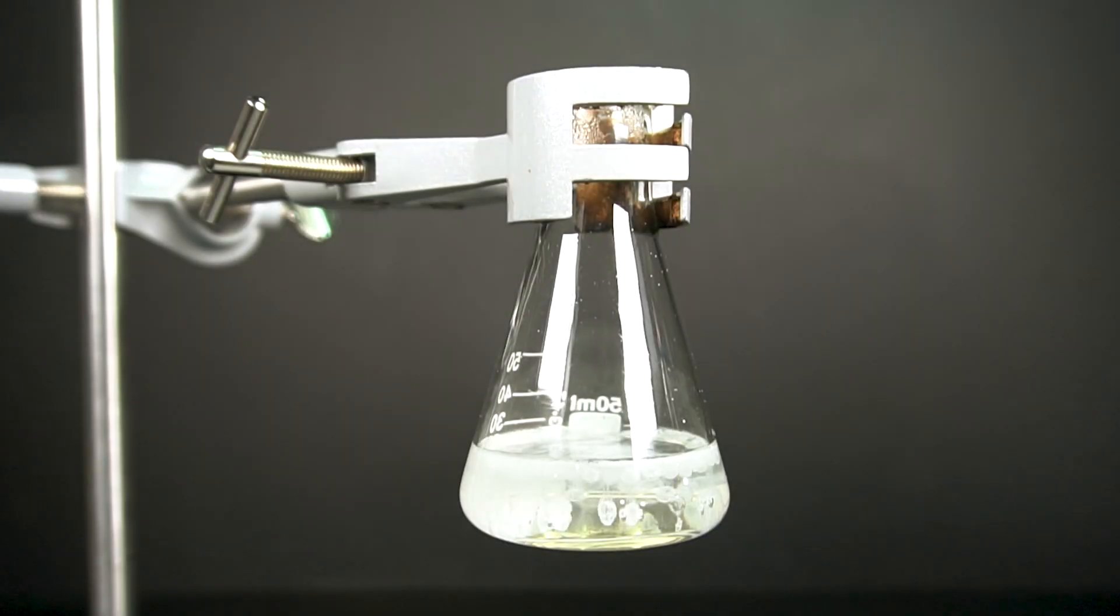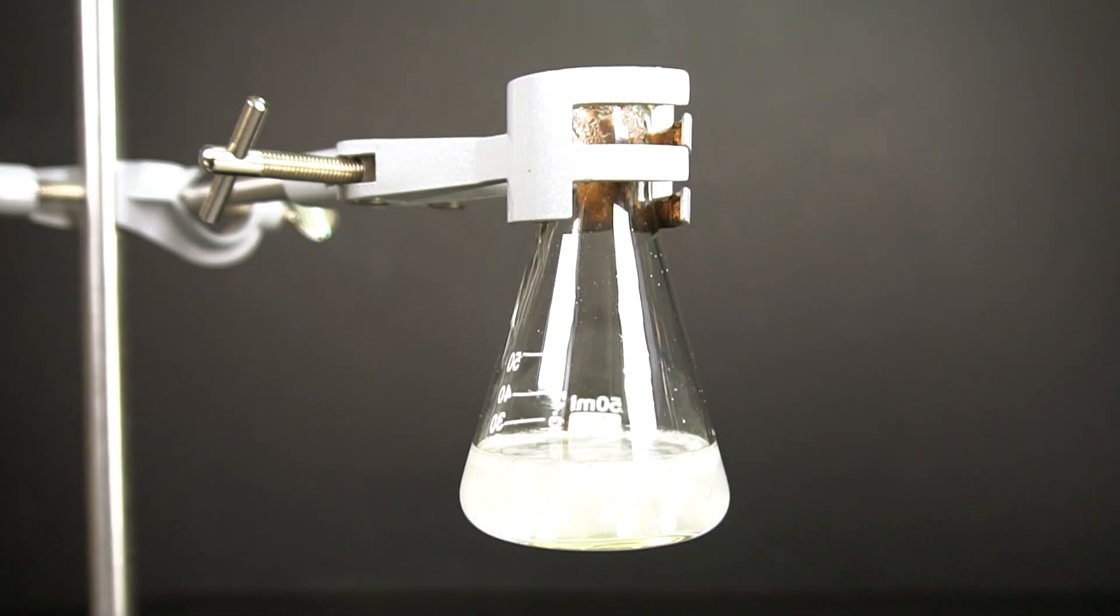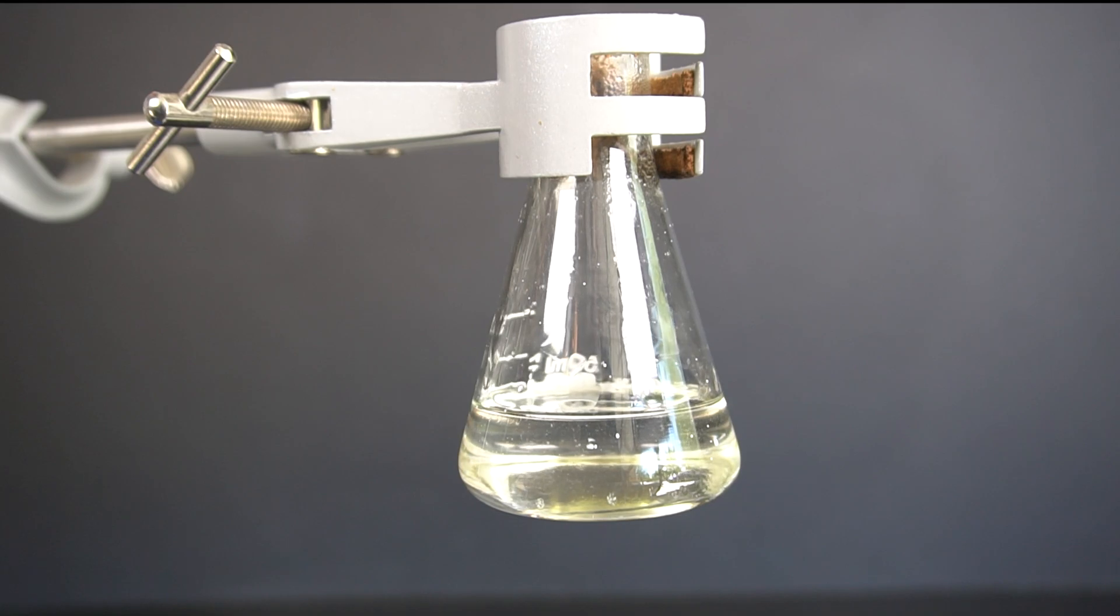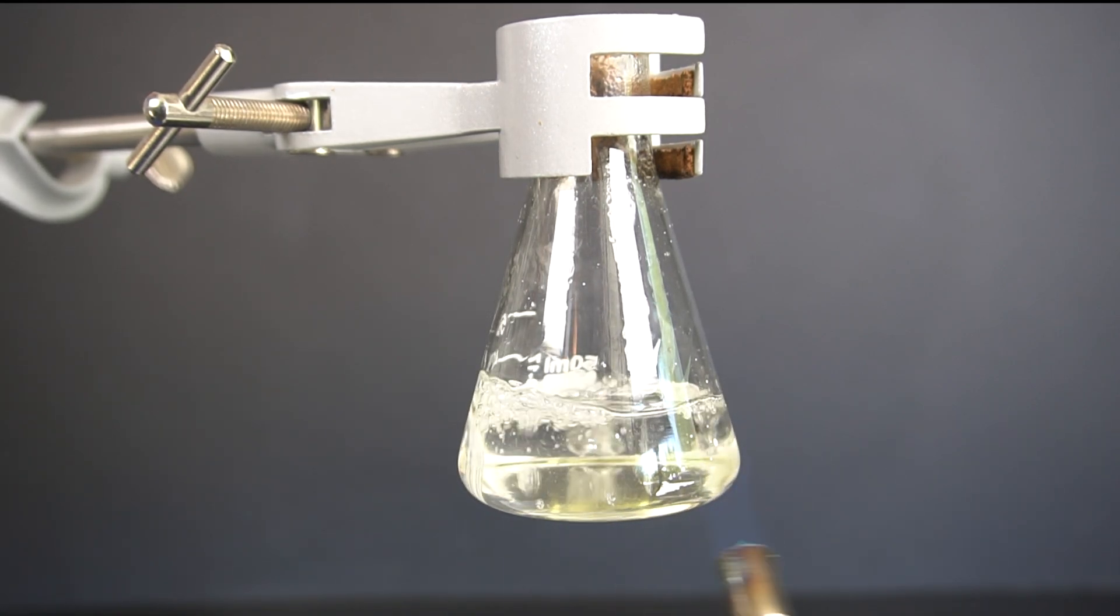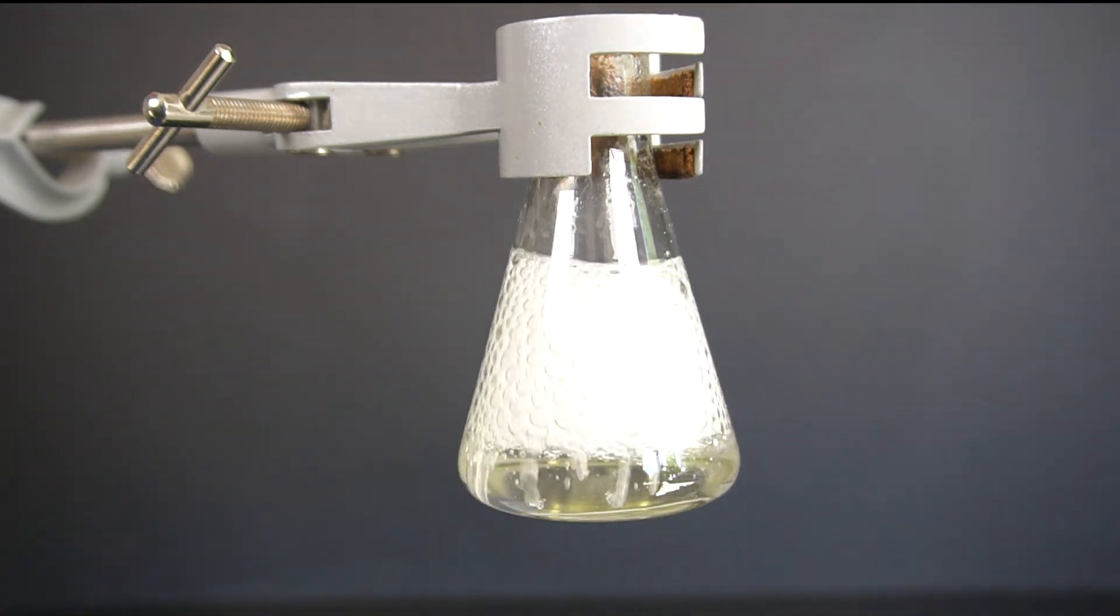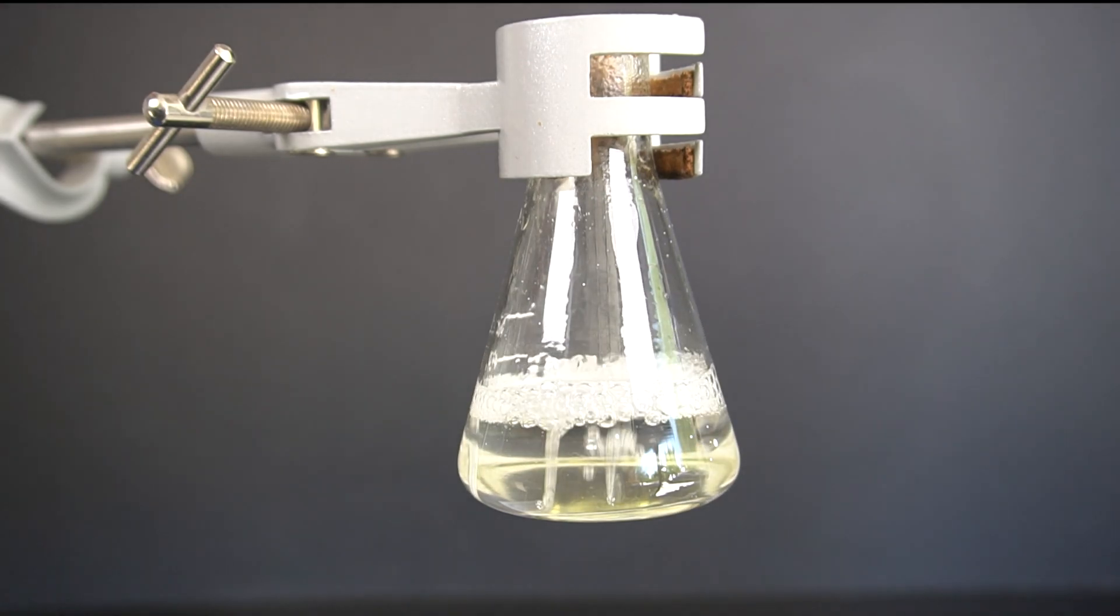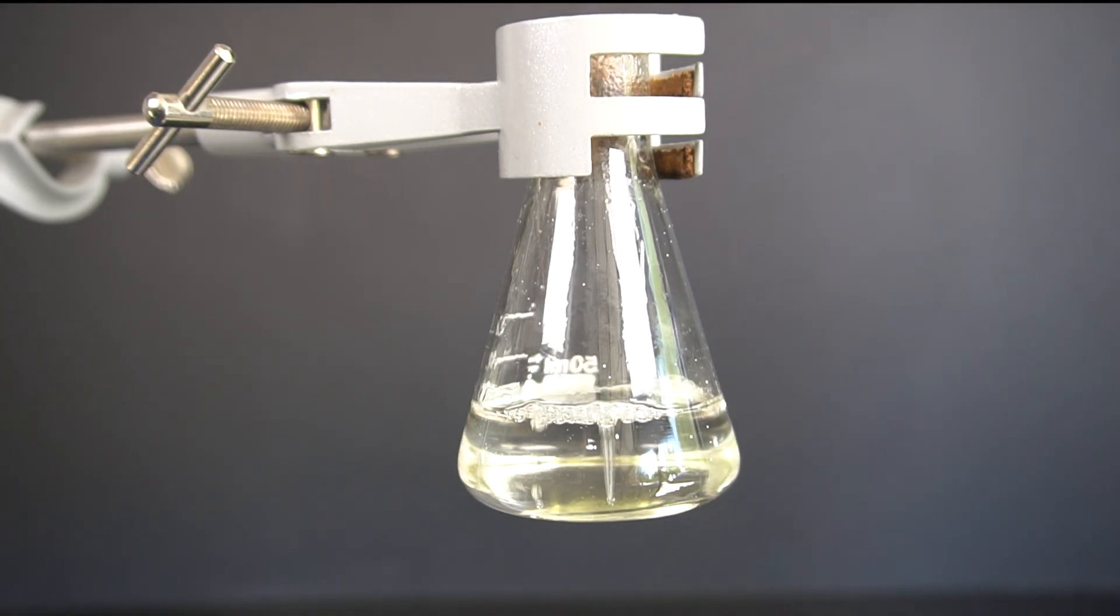Once all of the silica has been reacted into the sodium hydroxide, the solution will turn from cloudy to crystal clear. This part of the process took just under 2 hours to add all of my 12 grams of silica. Once the final addition of silica had been added, we wait for everything to clear up, followed by letting the solution cool at room temperature. From here, we have a solution of sodium silicate.